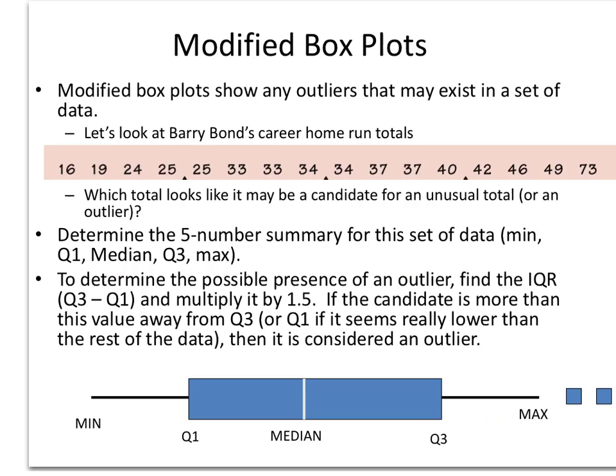Okay the next type of graph that you need to look at that we have looked at already is box plots but now we're going to look at what's called a modified box plot. And basically modified box plots are a way to represent outliers. So if you notice here these two boxes here represent outliers.